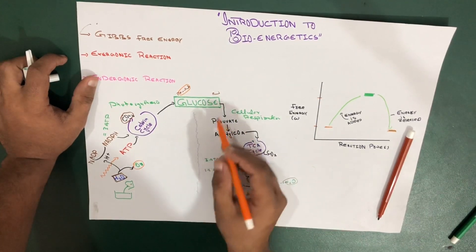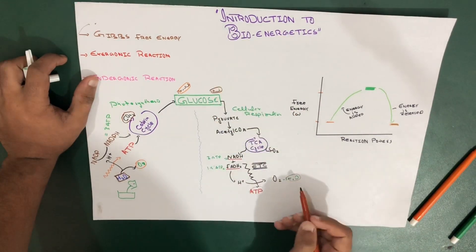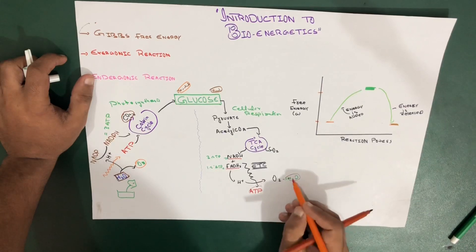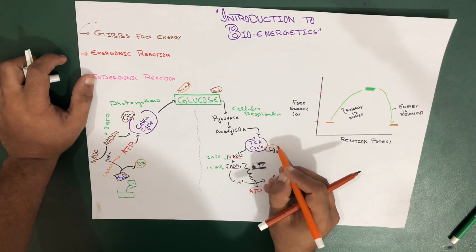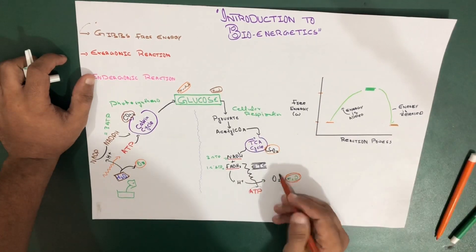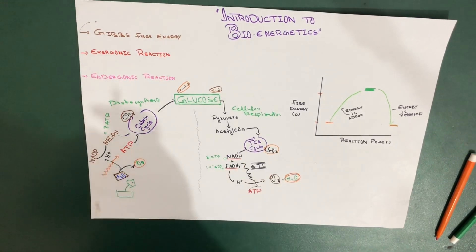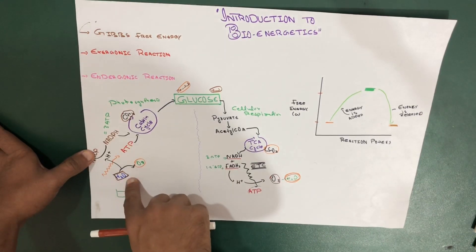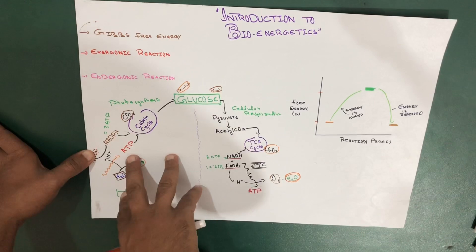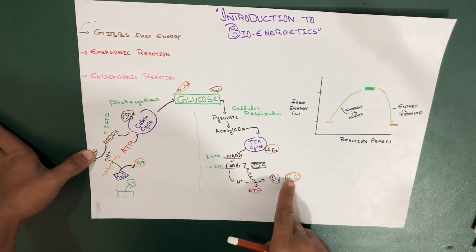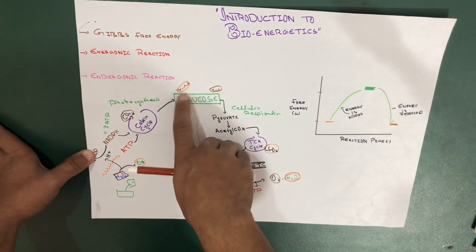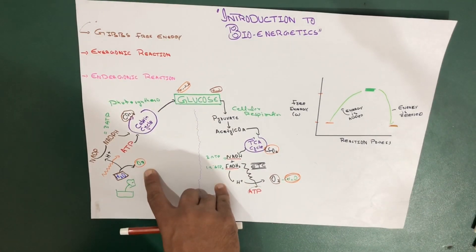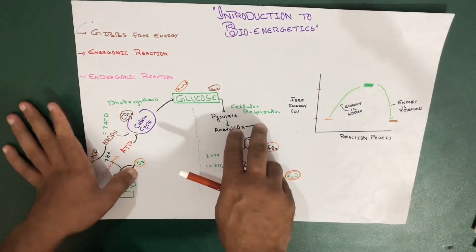In cellular respiration, glucose is the reactant. Following these processes, glucose is converted — it's now the reactant. We also get water as a product, and carbon dioxide as a product. Oxygen, which was a product in photosynthesis, is now a reactant in cellular respiration. So in both cases, what is a reactant in one is a product in the other: water, carbon dioxide, glucose, and oxygen all swap roles.